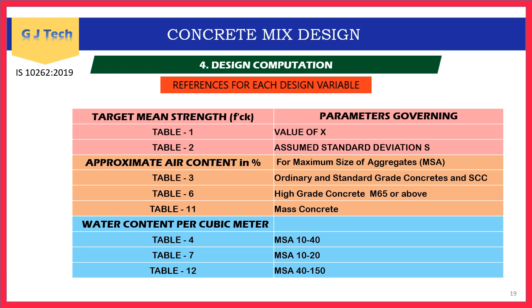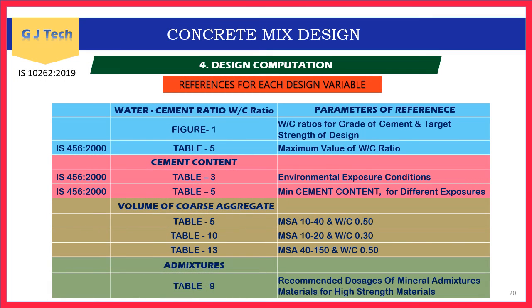Target mean strength: the X value is from Table 1 and standard deviation from Table 2. Approximate air content in percentage volume is taken directly from Tables 3, 6, and 11 depending on concrete type and maximum aggregate size. Water content is referred from three different tables depending on maximum aggregate size. Water-cement ratio is referred from Figure 1 (a graph with three curves); Table 5 gives the maximum water-cement ratio for cross-verification.